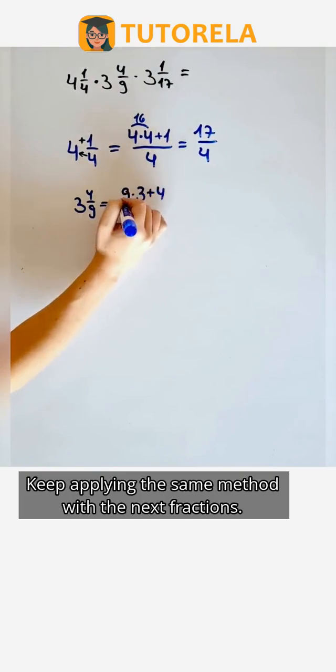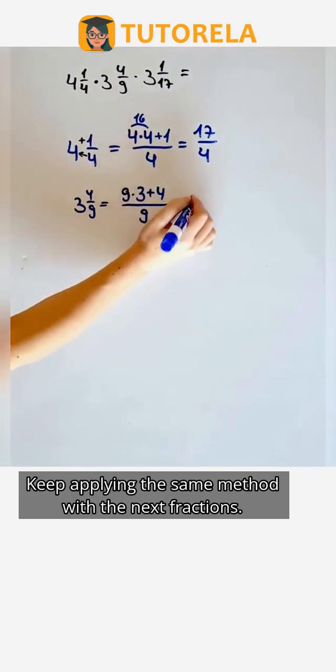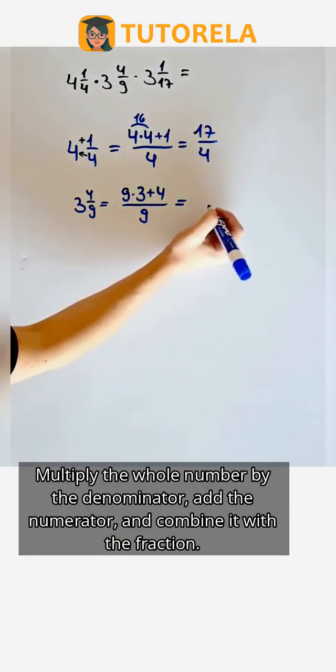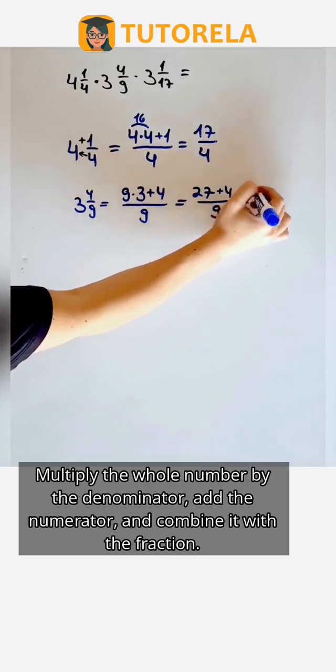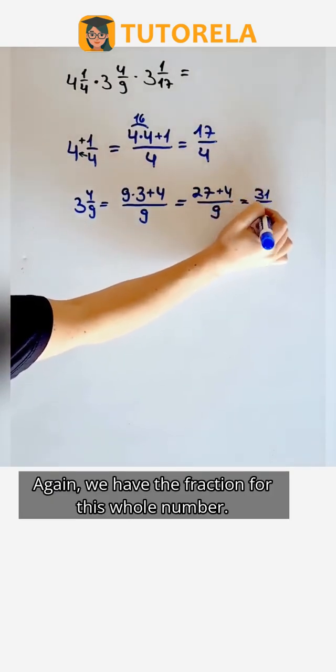Keep applying the same method with the next fractions. Multiply the whole number by the denominator, add the numerator, and combine it with the fraction. Again, we have the fraction for this whole number.